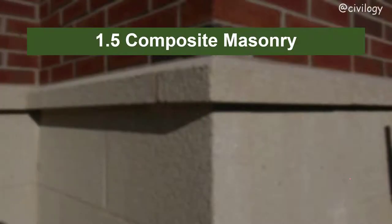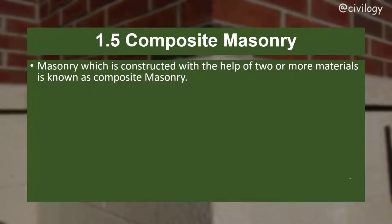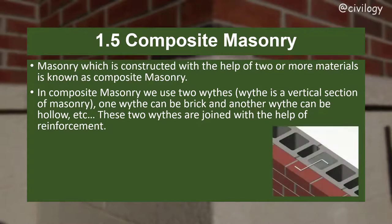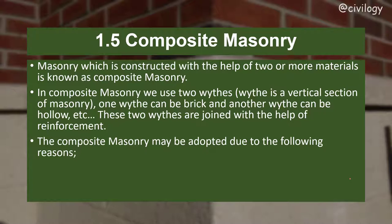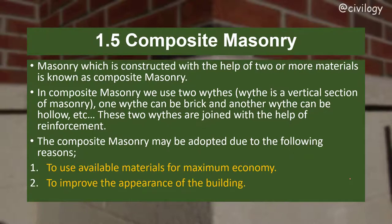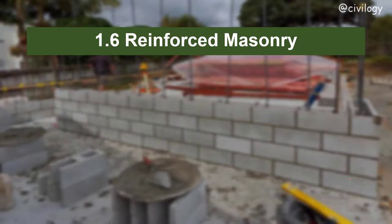Composite masonry is masonry constructed with two or more different materials. It uses two wythes — a wythe being a vertical section of masonry. As seen in the picture, one wythe can be brick and the other can be hollow block or another material, joined together with reinforcement. Composite masonry may be adopted to use available materials for maximum economy or to improve the appearance of the building.